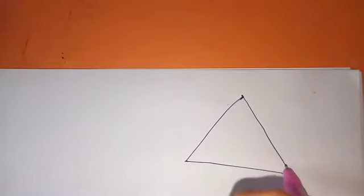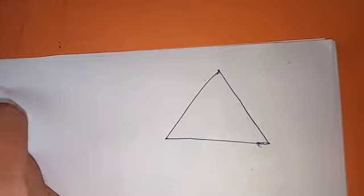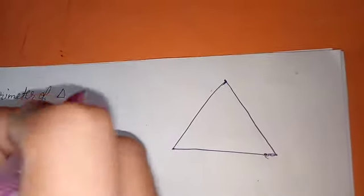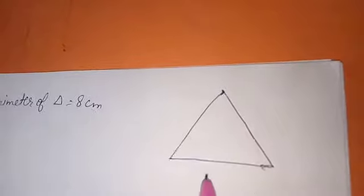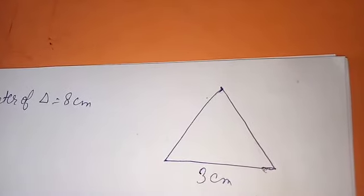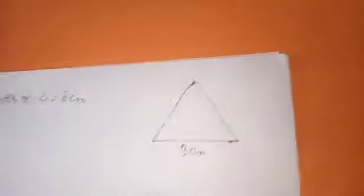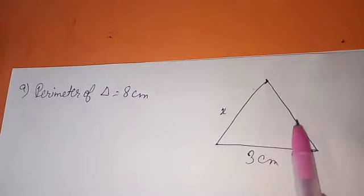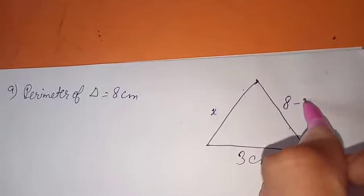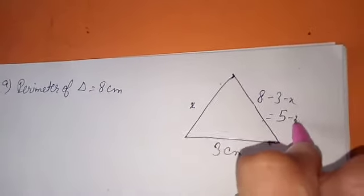Question number 9 is somewhat different. The perimeter of a triangle is 8 cm and one of its sides is 3 cm. Find the other two sides such that the triangle has maximum area. We can assume the known side is 3 cm. Let one of the other sides be X cm, so the third side is 8 − 3 − X = 5 − X cm.